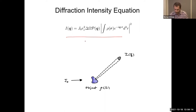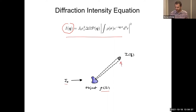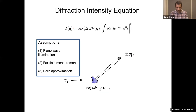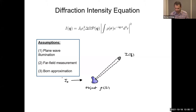What we're looking at is diffraction intensity. The basic idea is that we send in a beam of x-rays, which hits some kind of object with a scattering density or electron density ρ, and off in the distance we have a detector collecting light. What we want to know is how many photons it's going to collect in an exposure — that's the intensity I, which is a function of the variable q. The assumptions are: plane wave illumination (fully coherent), far-field measurements, and the Born approximation.